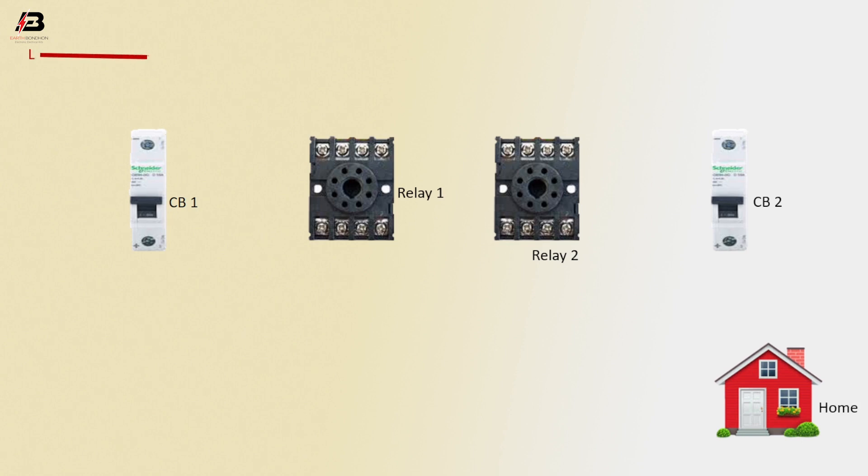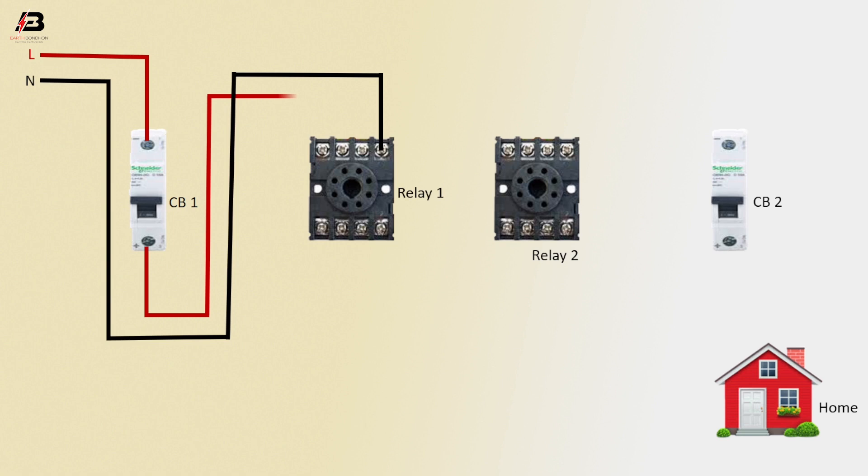Phase Connection Input to Circuit Breaker 1, Neutral Connection Input to Relay 1, Phase Connection from Circuit Breaker to Connect Relay 1, Phase Connection between Relay 1 and Relay 2, Neutral Connection to Relay 2.